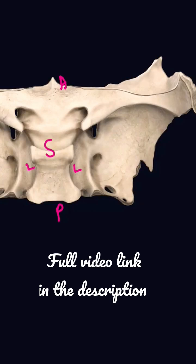You have six surfaces: a superior, inferior, anterior, posterior, and two lateral surfaces.